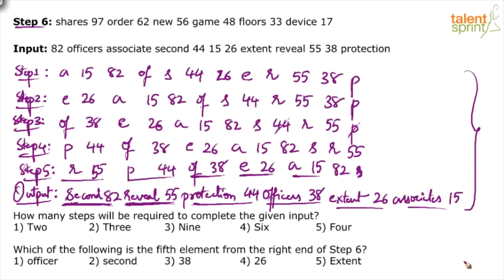It is preferred to follow the complete step-by-step process. Sometimes questions ask how many elements are between, say, 38 and 'second' in step three — answering such questions gets complex if you use cancellations and arrows. This looks lengthy but when you do it yourself it will take only 60 to 90 seconds. Once you have the full step-by-step process, answering questions becomes a cakewalk.